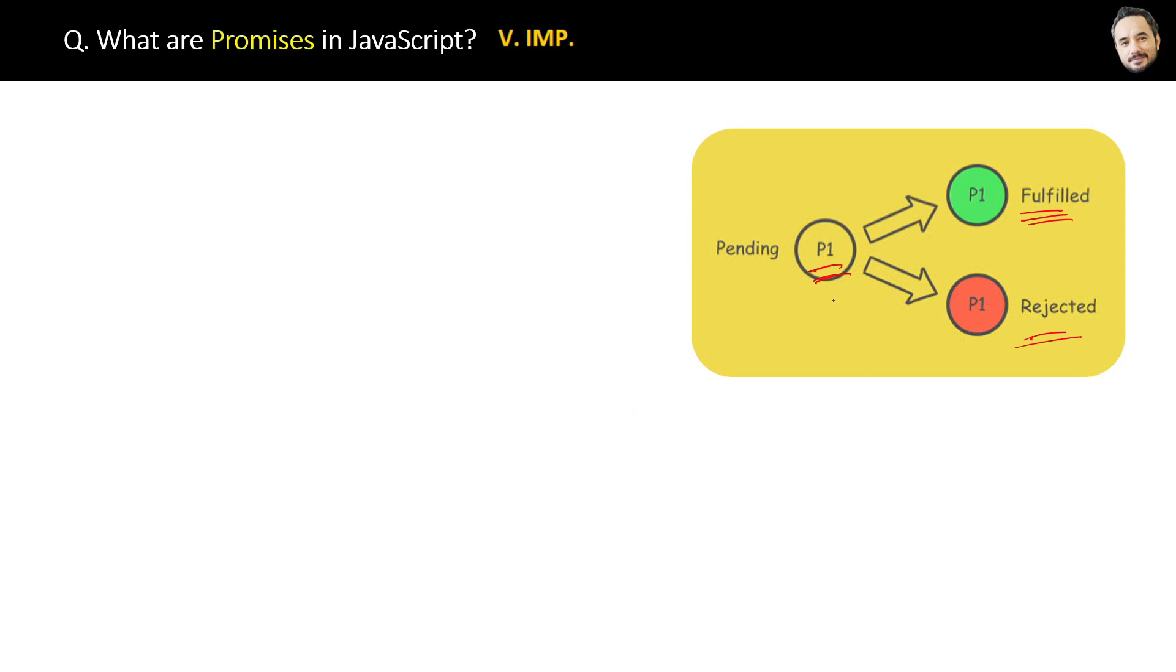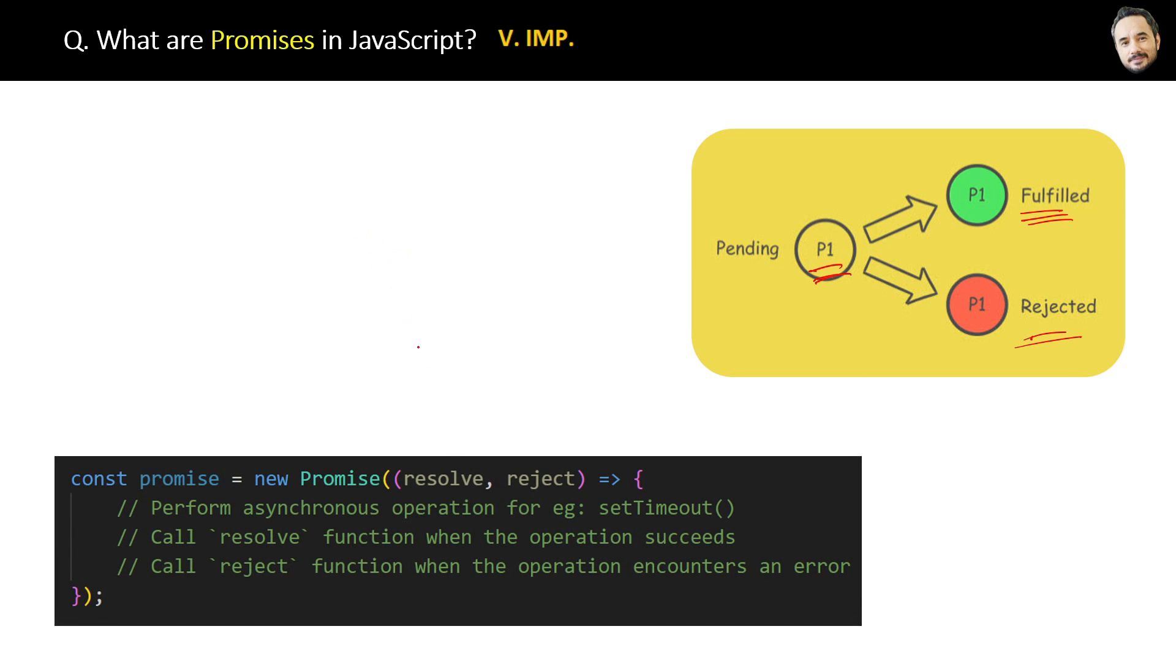Now here is the pseudo code of a Promise. The first thing that happens inside a Promise is an asynchronous operation with the help of setTimeout or setInterval methods. Then you can see that Promises are created using the Promise constructor, which accepts two parameters: resolve and reject. These are basically callback functions.